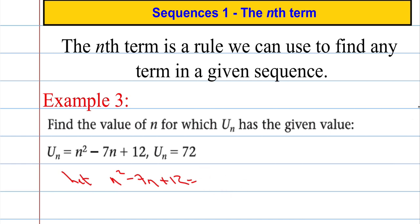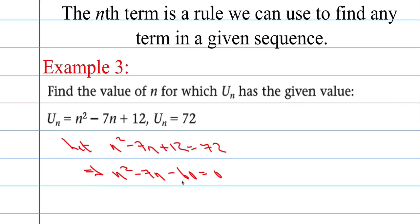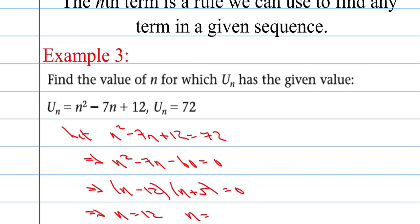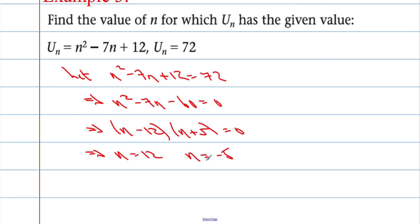So let's see if we can solve for n. We're going to get n squared minus 7n minus 60 equals 0. Numbers that multiply to make negative 60 but add to make negative 7: (n minus 12)(n plus 5) equals 0, which means n must equal 12 or n equals negative 5. Obviously we can't have the negative 5th term of the sequence, so the answer is just n equals 12. The 12th term of the sequence gives us an answer of 72.